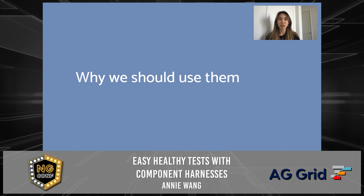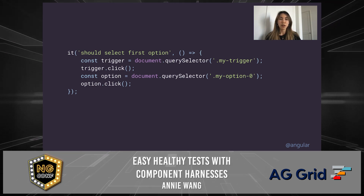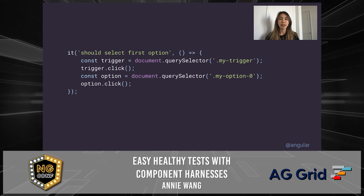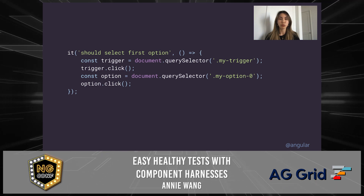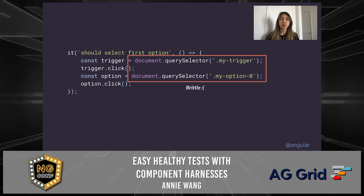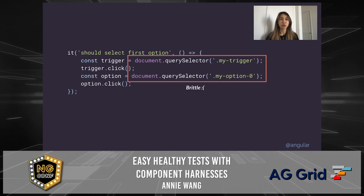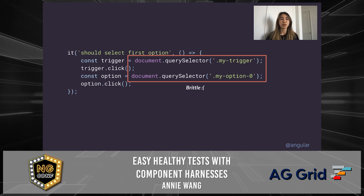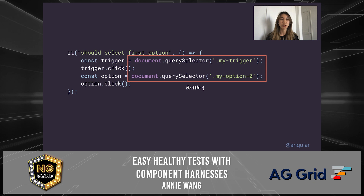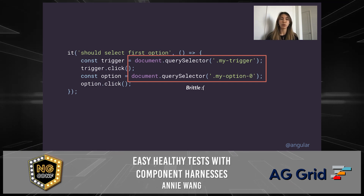So why do we want to use component harnesses? This is what selecting an option in a dropdown would look like in a typical unit test. First, you would get the trigger of your select through QuerySelector by a class name, then click on the trigger, find the option you're looking for maybe also through QuerySelector, and click on that option. The problem is this test is very brittle — if you change your class name, you'll have to update the selector for all your tests. This is especially troublesome with components managed by other people, like a component library, making it difficult for maintainers to optimize or make internal DOM changes. It's also worth noting that if the component changes to do something async, the click will also break — you'd have to add something like fixture.whenStable.